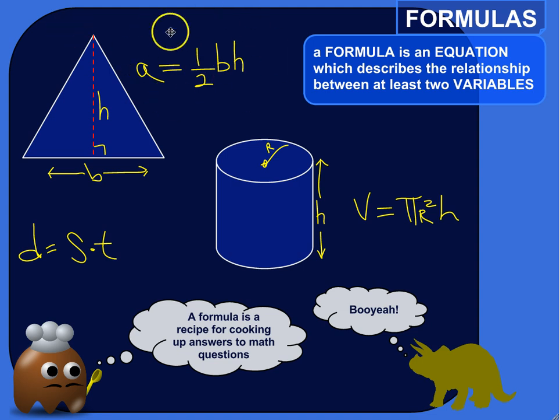Up here is the formula for the area of a triangle, and it goes like this. Area is equal to one-half times the base of the triangle times the height of the triangle. So this formula is describing the relationship between the area of the triangle, A, the base of the triangle, and the height of the triangle. This describes the relationship between three different variables, A, B, and H, the area, base, and height.